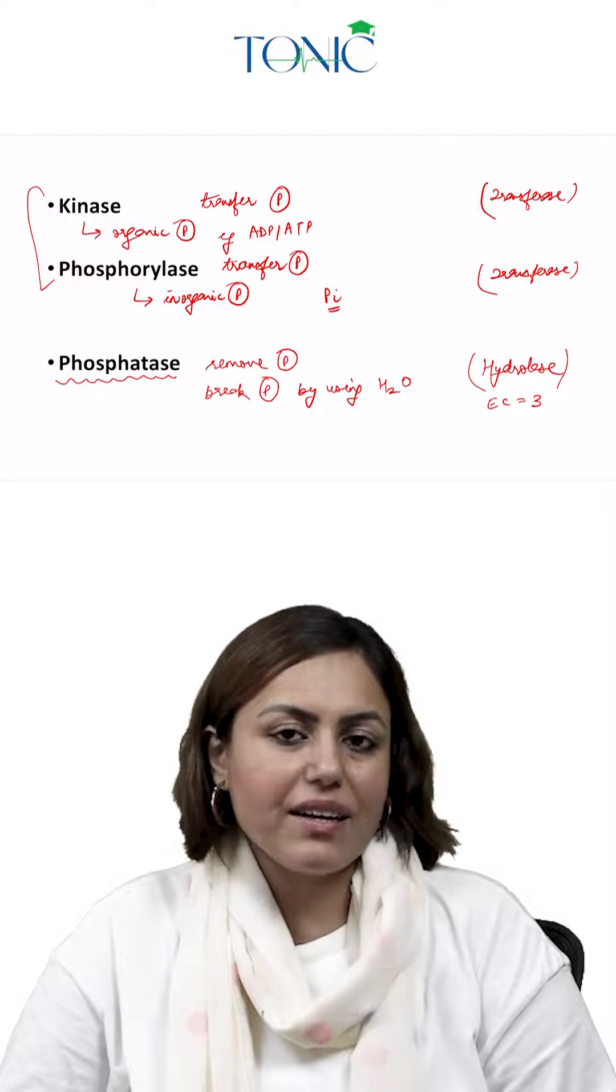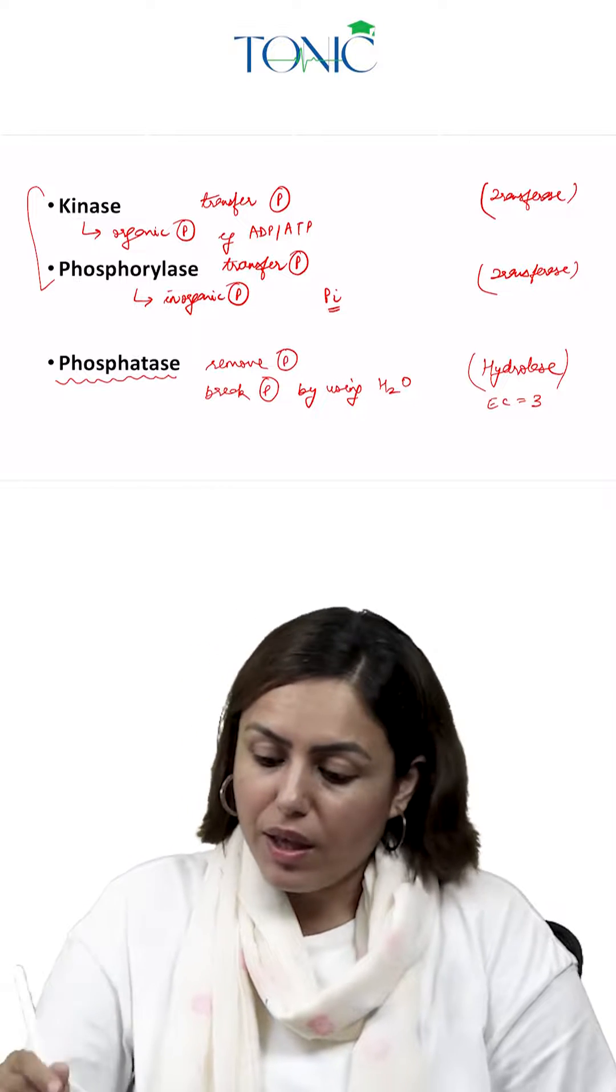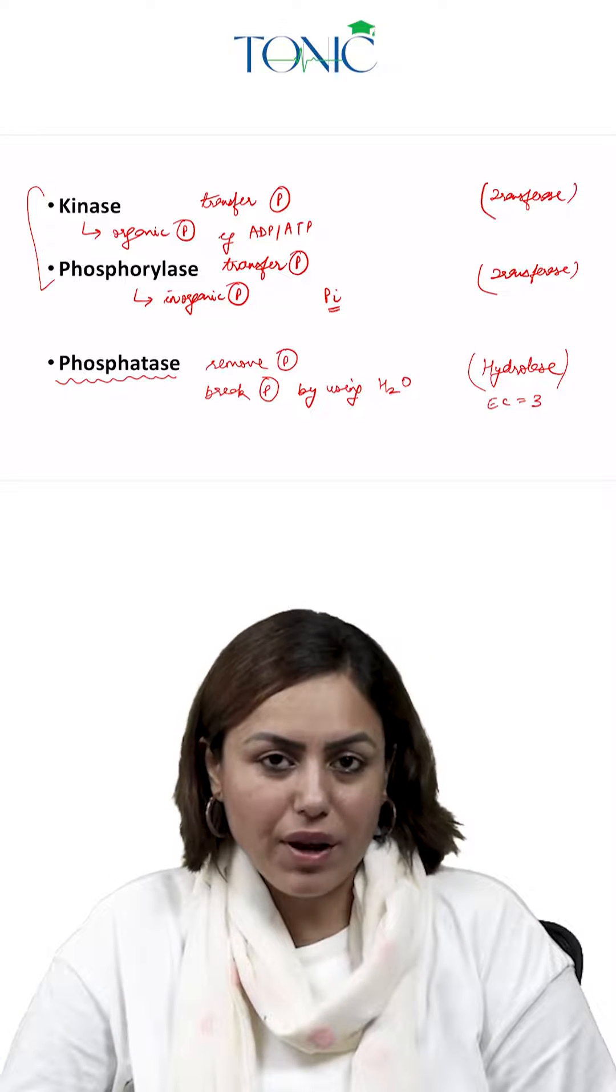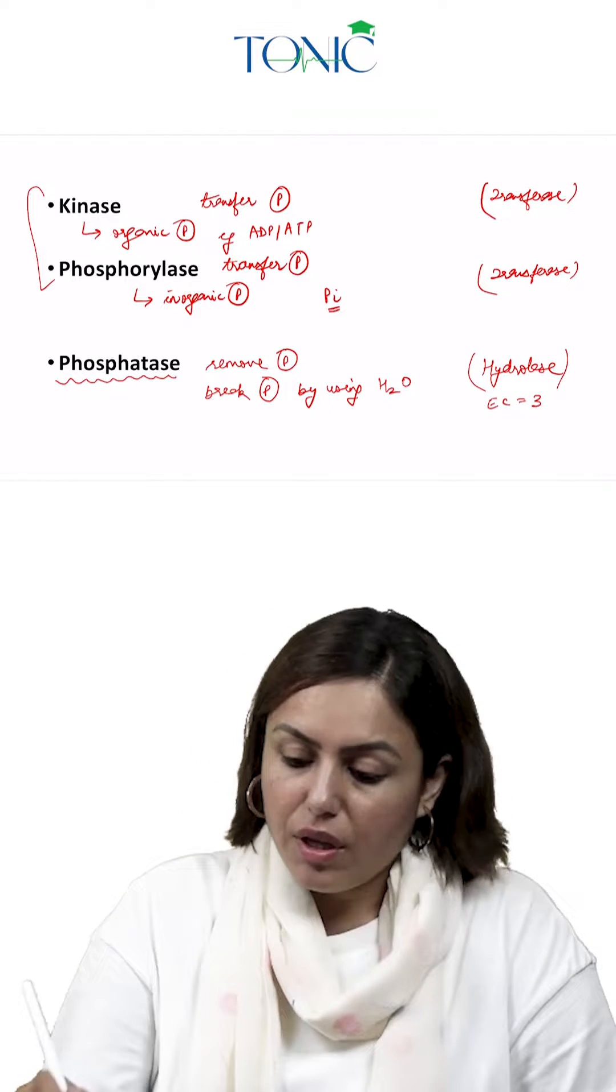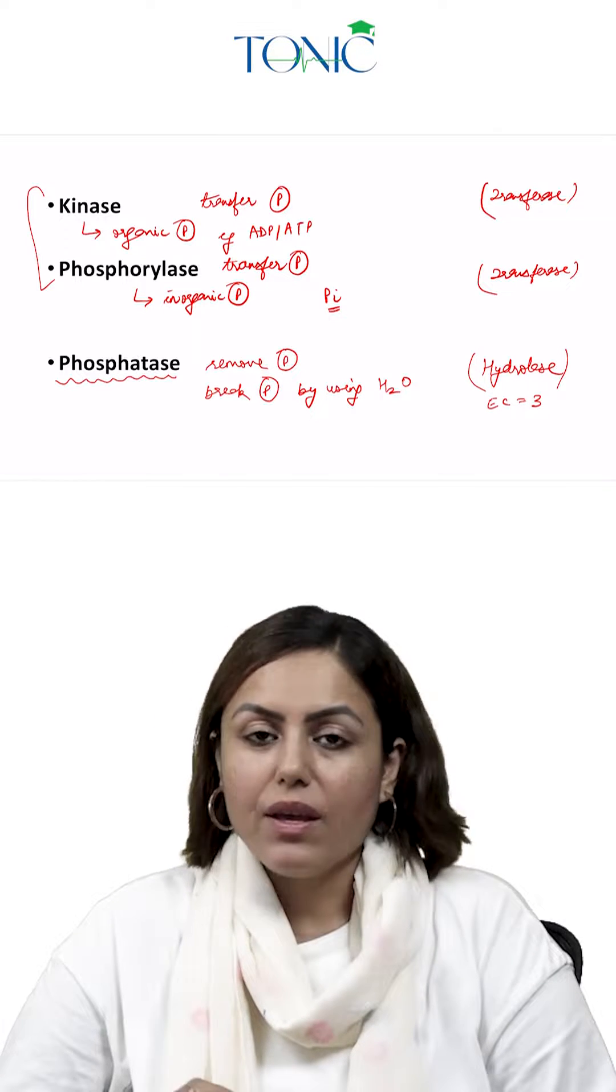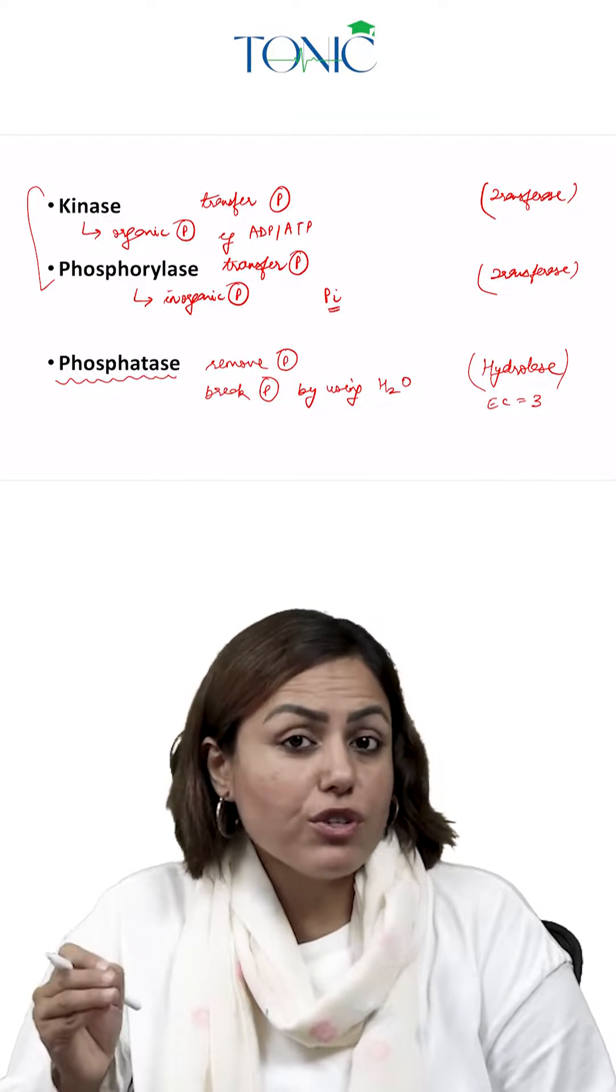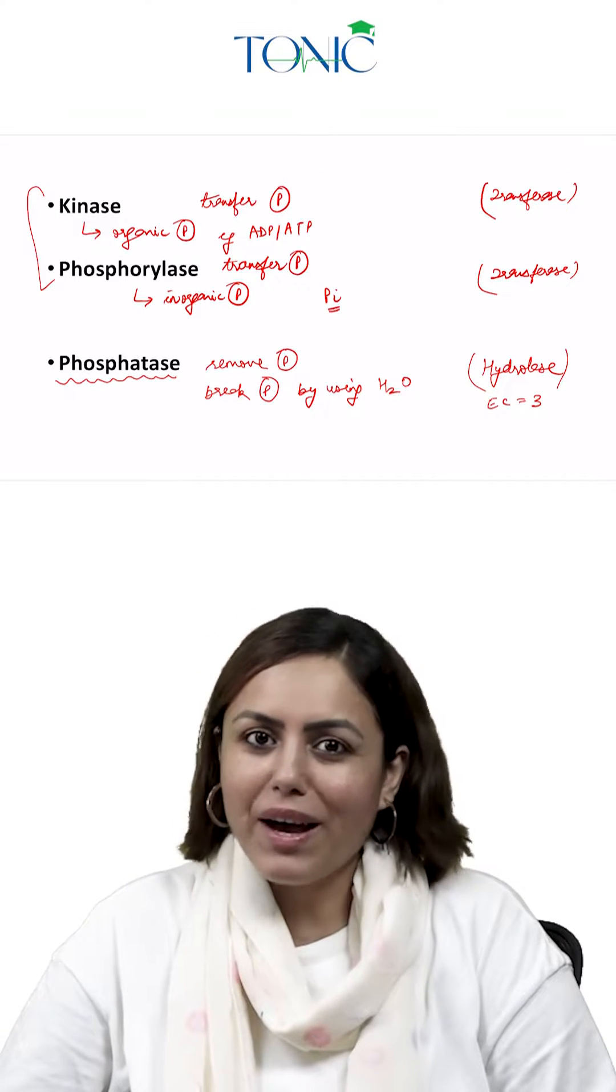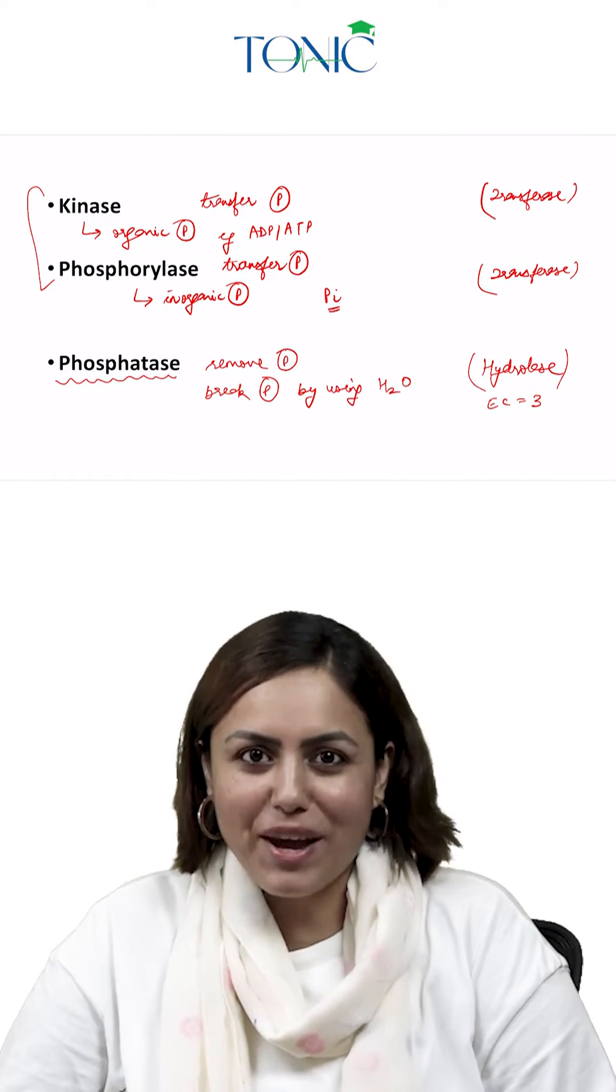The enzyme category of hydrolase is number three. For example, glycogen phosphorylase - enzyme category is two. Glucose-6-phosphatase - enzyme category number is three. Bye bye, best of luck. Keep doing high-yielding biochemistry.